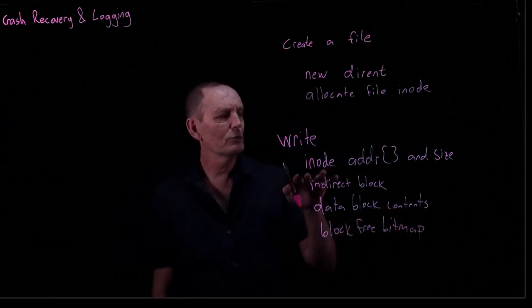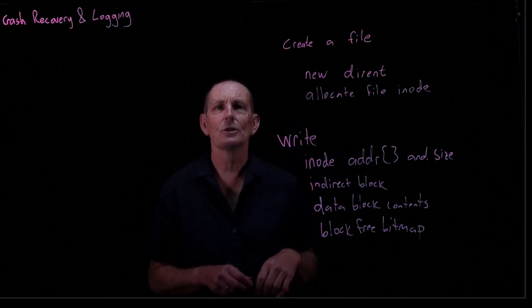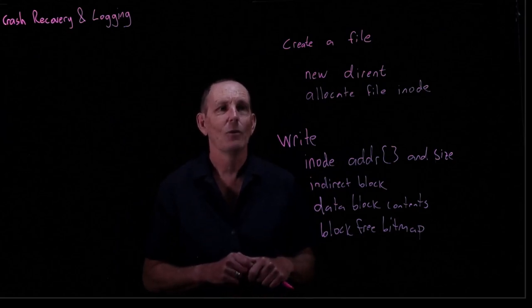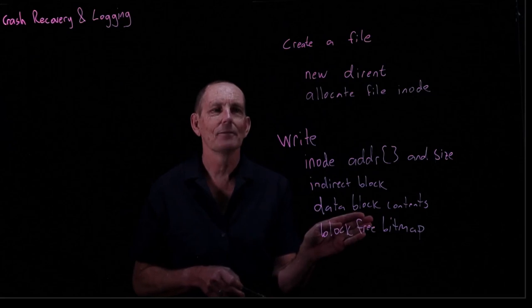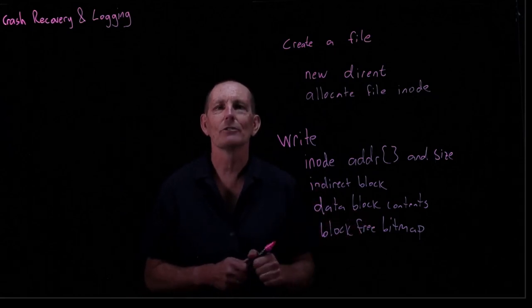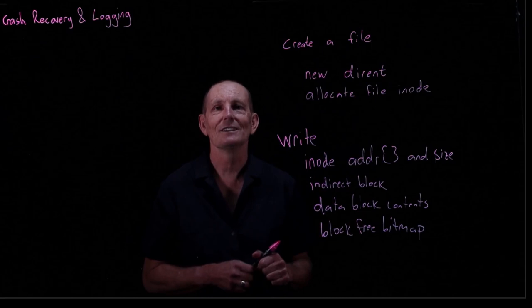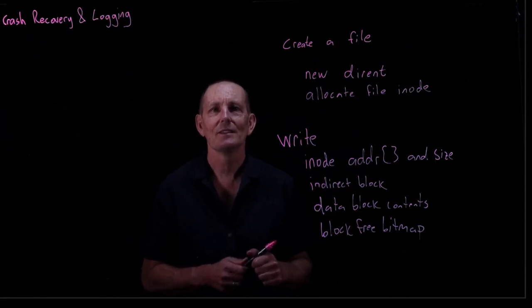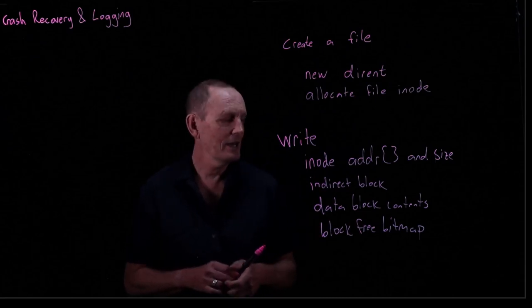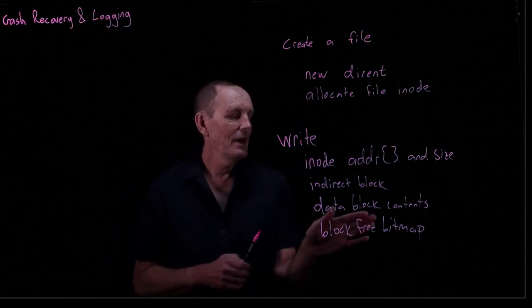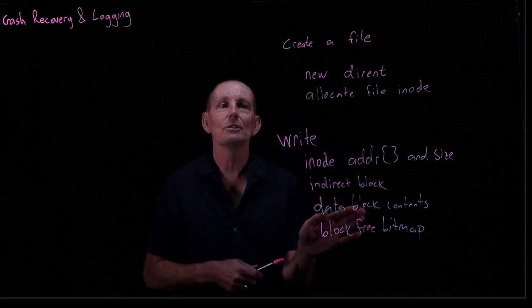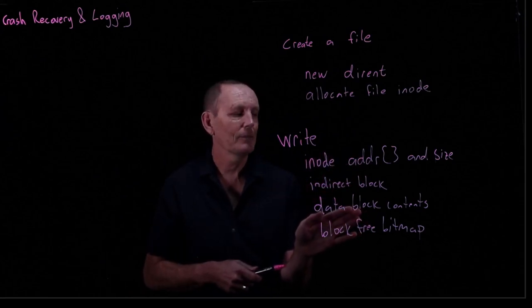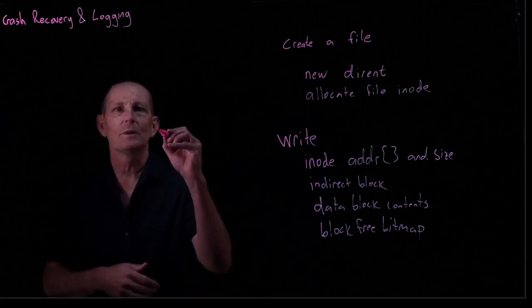So all of these four need to be written successfully in order to complete the write. What are some ways in which this can go wrong? So one way is maybe the block-free bitmap doesn't get written, in which case now we've got an inode referring to a block that is actually marked as free and is going to be reallocated at some point. That's a disaster. Maybe we marked it as not free and nothing else happened. In which case now, again, we've used a block that we'll never get back again.